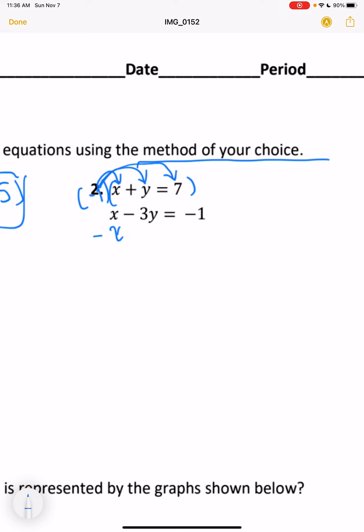So we would end up with negative x minus y equals negative 7. Now we add them all up. Those cancel out.